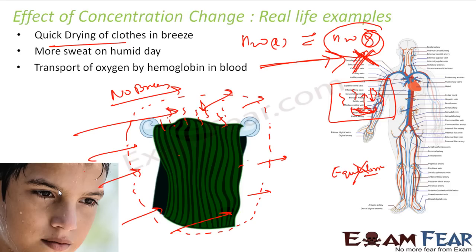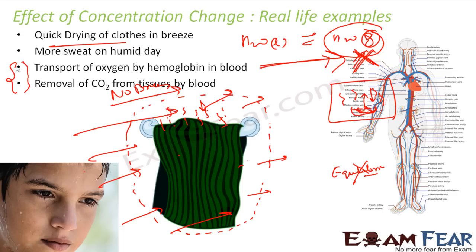Equilibrium of concentration also plays a vital role in the blood. The blood transports oxygen via hemoglobin and works totally on equilibrium. Equilibrium plays a critical role in the transport of oxygen and also in the removal of carbon dioxide from tissues. Our body itself runs on equilibrium — whether it is sweating, transport of oxygen, or transport of carbon dioxide.